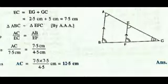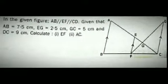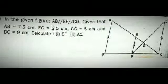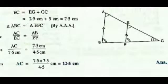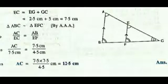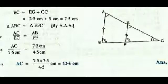For finding AC, take triangles CEF and ABC. These two triangles have two corresponding angles and a common angle, so by AAA, triangle ABC is similar to triangle CEF. Then from the proportion AC by EC equals AB by EF, substituting: AC by 7.5 equals 7.5 by 4.5. Simplifying gives AC equal to 12.5 cm.